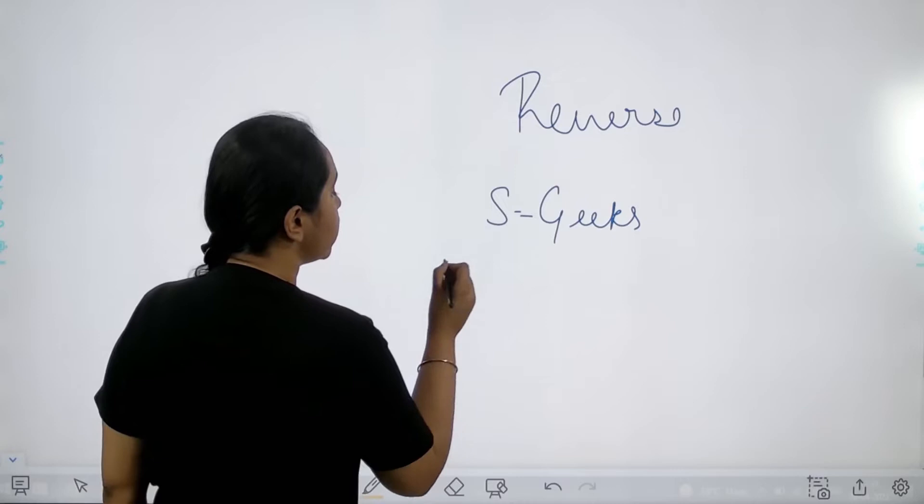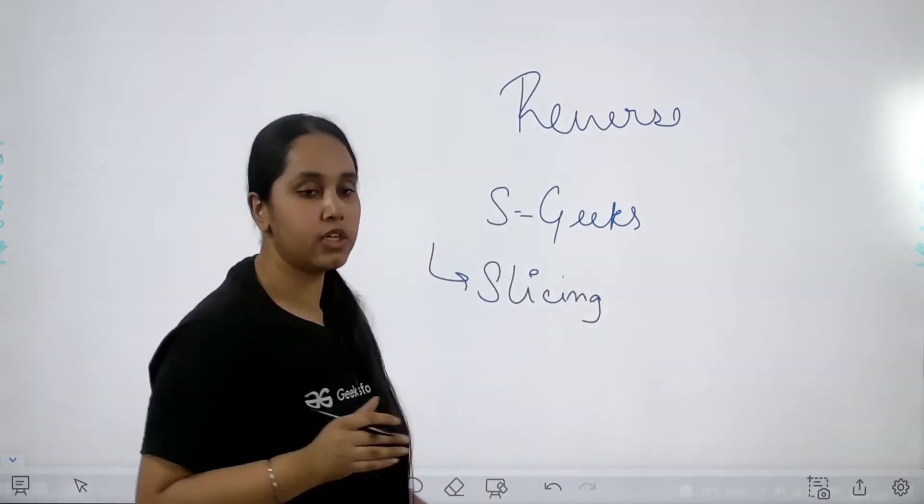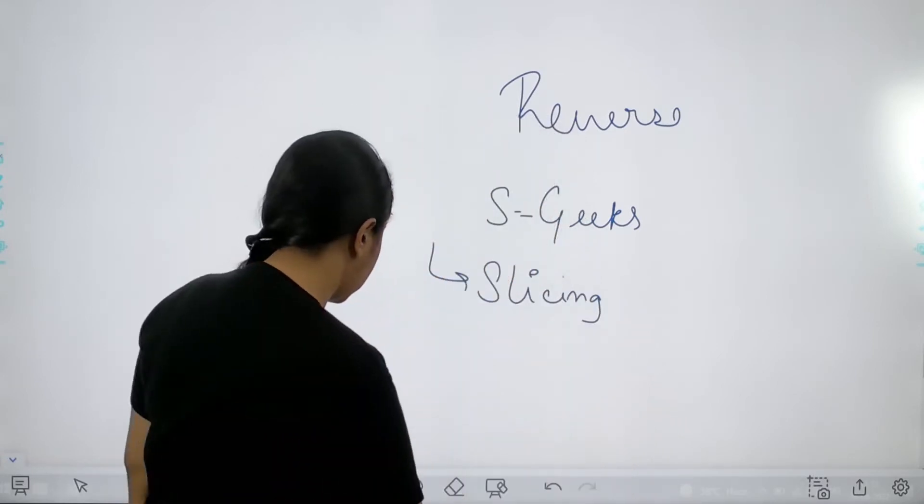For doing this I would use a method named as slicing. For using slicing you need to be clear with the concept of index values. So let's do that first.